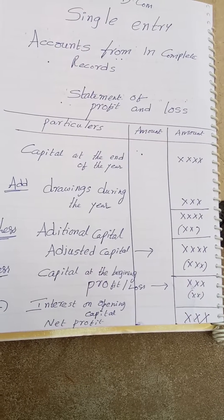For the purpose of finding out capitals, we have to prepare a statement of affairs. A statement of affairs is more similar to a balance sheet. If any adjustments are given, you have to make all adjustments in the closing statement of affairs.